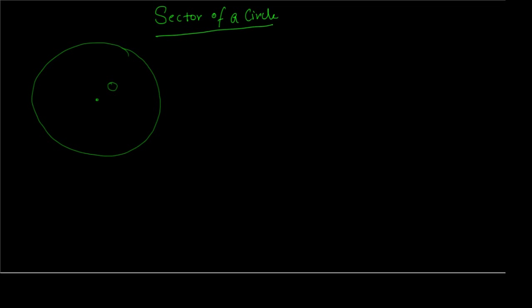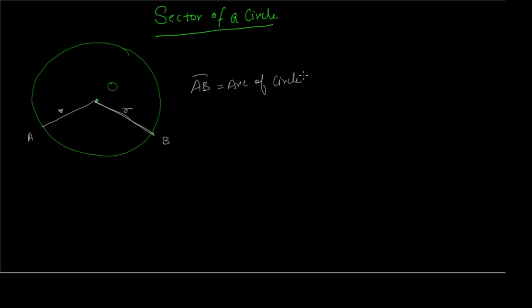We now take up the next concept in this chapter: the sector of a circle. First, let us understand what a sector is. Suppose we have a circle with center O. We draw any two radii — OA and OB. The part of the circle bounded between points A and B is called an arc of the circle.